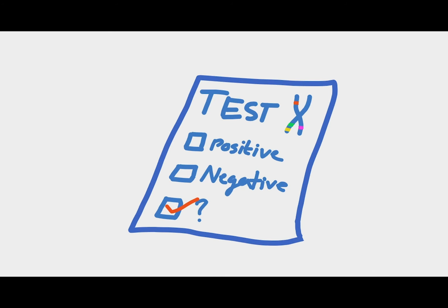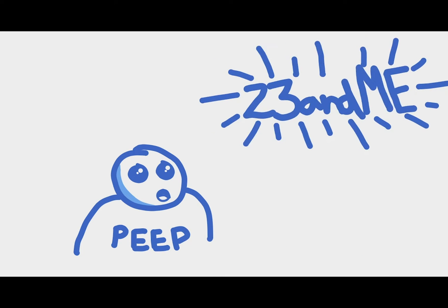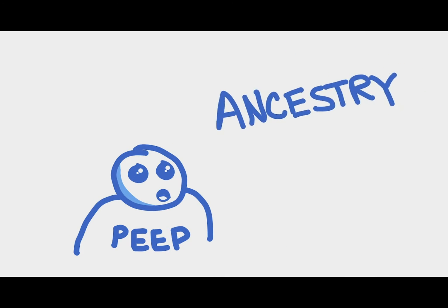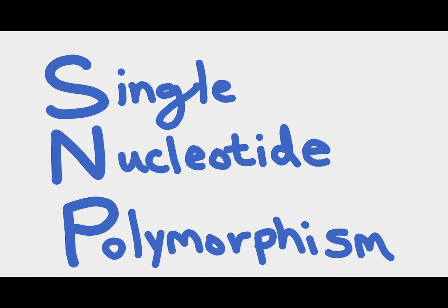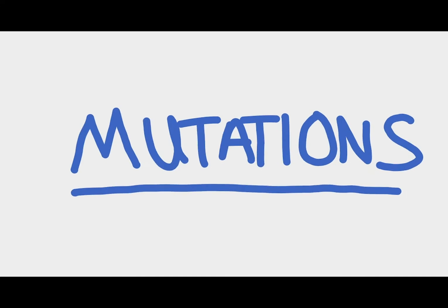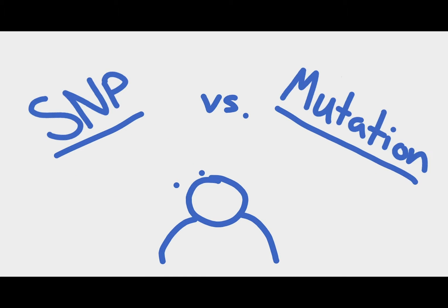If any of you have gone a genetic test or gotten curious about 23andMe or Ancestry.com and saw the words SNP, which stands for single nucleotide polymorphism, and mutations, and got confused between an SNP and a mutation, then I'm here to help.